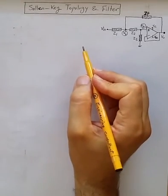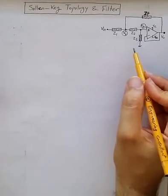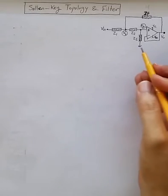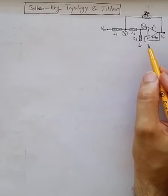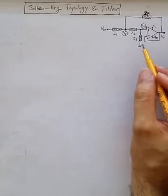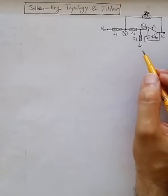Understanding Sallen-Key Topology and Filter Design. This configuration is well known as Sallen-Key Topology or Configuration based on one op-amp. It is an efficient and general way of realizing second-order LTI systems and filters.